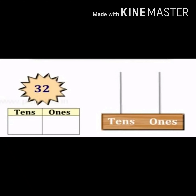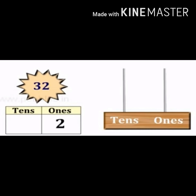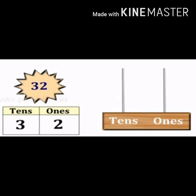First of all we have to check how many ones and tens are there in number 32. Check the ones place — which number is at ones place? It is number 2. Now check the tens place — which number is at tens place? It is number 3. Now we have to draw beads to show number 32.